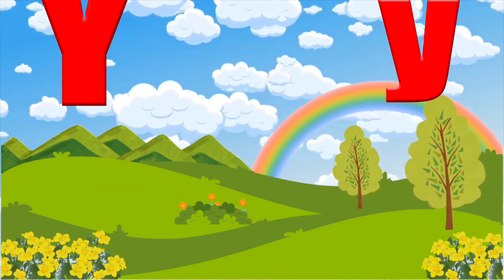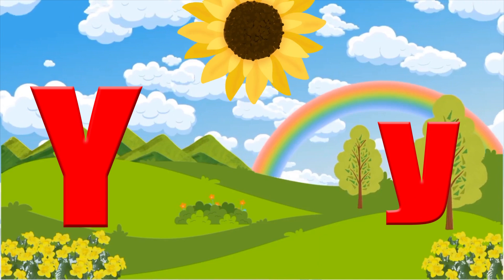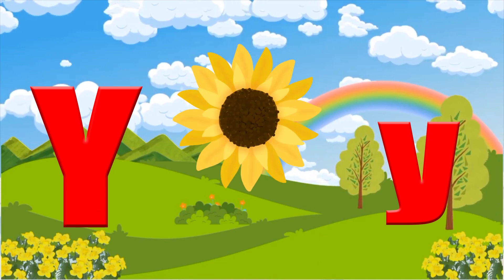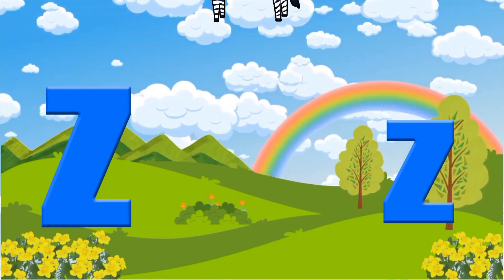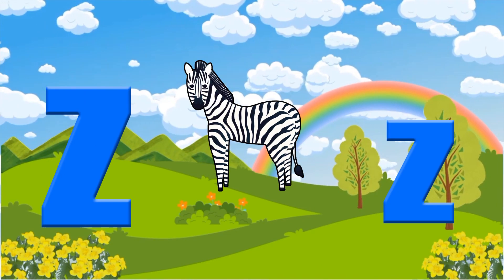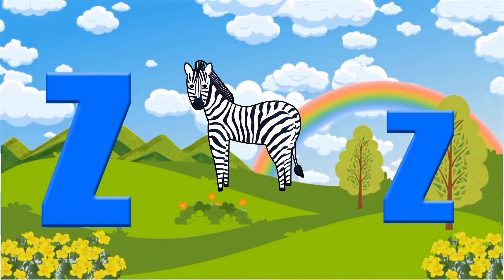Y is for yellow, ye-ye-yellow. Z is for zebra, z-z-z-z.